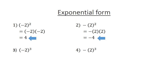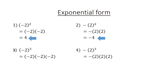Example 3: negative 2 in brackets to the power of 3 — the number 4 is negative, giving negative 2 times negative 2 times negative 2. Example 4: positive 2 to the power of 3, where you have a negative before and say 2 times 2 times 2. Both equal negative 8.